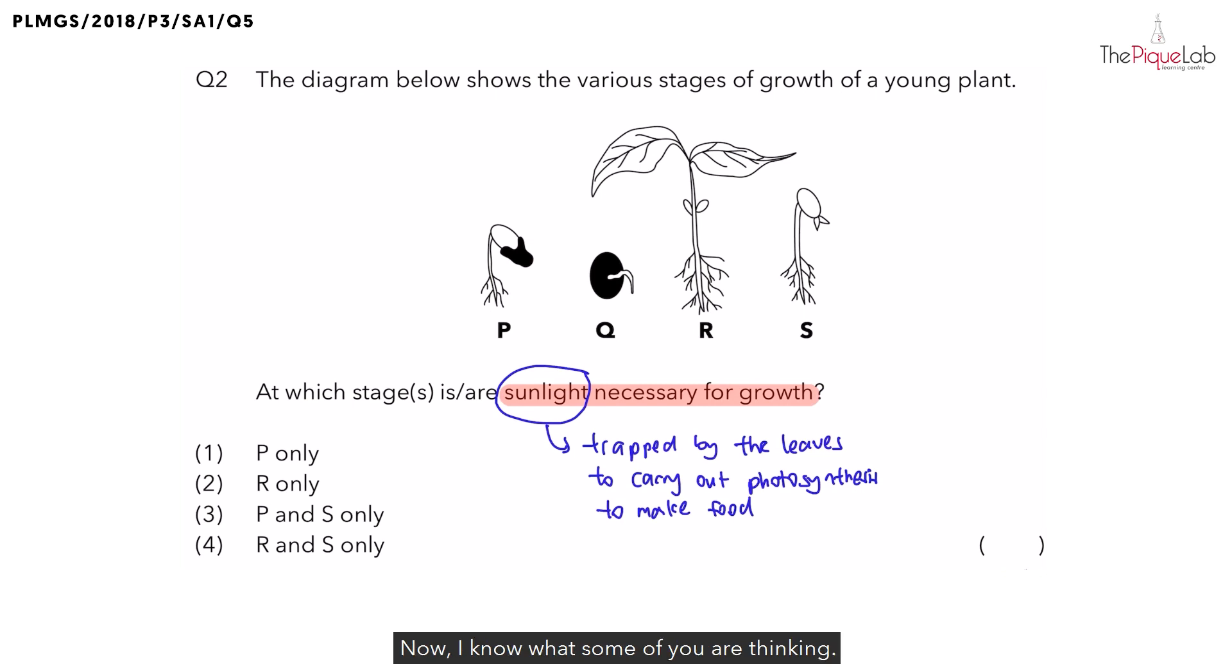Now, I know what some of you are thinking. We can see that there are leaves in R as well as S. So, you will choose your answer as option 4. But, if you chose 4 as your answer, you will get this question wrong.